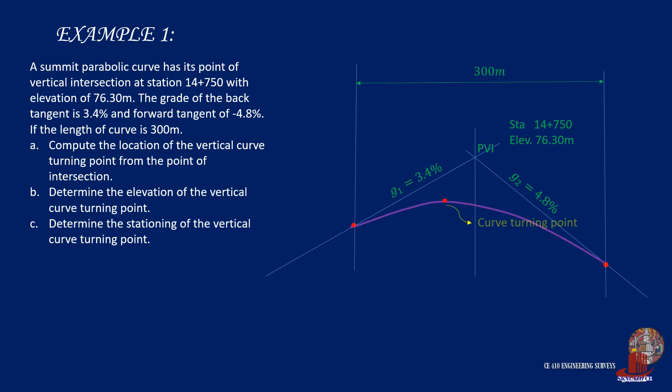The vertical curve turning point mentioned in the requirement means the summit of the curve. Requirement A requires the location of the curve, b asks for its elevation, and c its stationing.